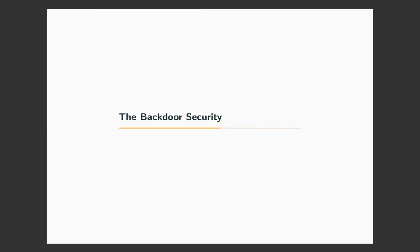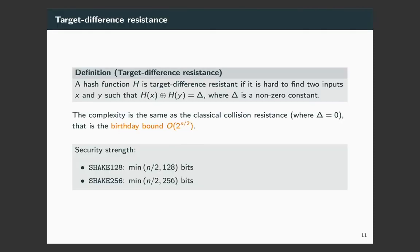Now, I will explain the backdoor security of the malicious framework. Firstly, let me introduce a security notion, target difference resistance. Its definition is as follows. A hash function H is target difference resistant if it is hard to find two inputs X and Y such that H(X) XOR H(Y) equal to delta, where delta is a non-zero constant. This notion is similar to the classical collision resistance of a hash function, where delta equal to zero, and the complexity is also the same as that of the collision resistance. That is 2 to the power of n/2. n is the length of the hash value. The target difference resistance naturally applies to XOF, as XOF is also a kind of a hash function. In terms of SHAKE-128, its security strength against the target is a minimal value of n/2 and 128, and the security strength can be doubled for SHAKE-256.